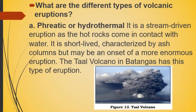What are the different types of volcanic eruptions? A) Phreatic or hydrothermal: it is a steam-driven eruption where hot rocks come in contact with water. It is short-lived, characterized by ash columns, but may be an onset of a more enormous eruption. Taal volcano in Batangas has this type of eruption.